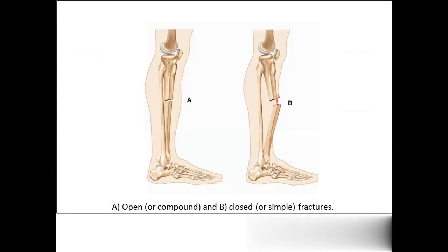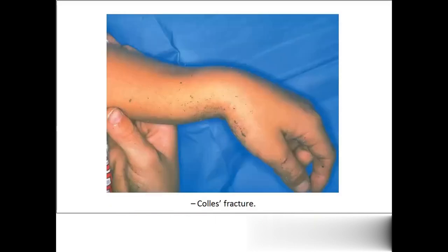Looking at the picture: A is a closed or simple fracture — no bleeding visible. B is an open or compound fracture — you can see bleeding and sometimes even the fractured bone. This also shows Colles fracture, which is the common wrist fracture.